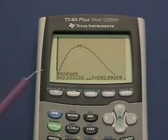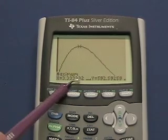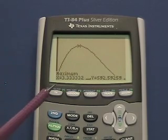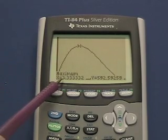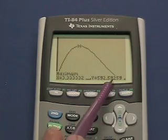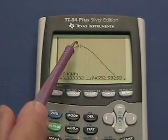According to this, the number indicated is 3.3 repeating. Even though there's a 2 over here, that's due to the limiting capabilities of any calculator. So I could safely say that x value is 10 thirds. The absolute maximum volume, which is the highest volume achieved with that sheet of cardboard, is approximately 592.59 cubic inches.